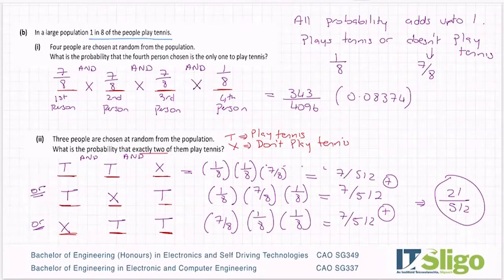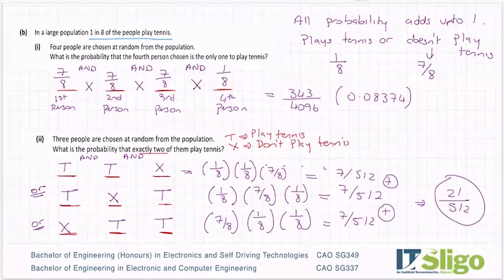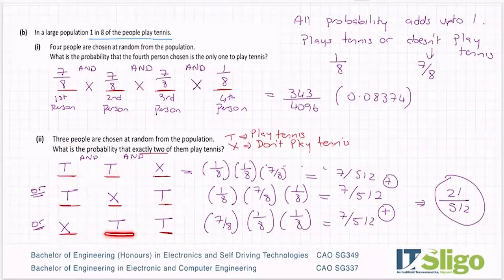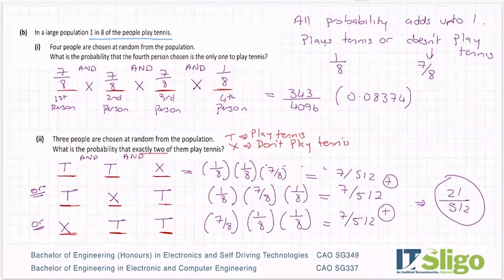Why did I have to consider all the OR options here? Because in this question they didn't tell me which two out of the three people play tennis, so I had to look at all the different scenarios where two people play tennis. The difference with the earlier question was that they gave me a specific order: the fourth person was the only one who played tennis, so there was only one order — not tennis, not tennis, not tennis, tennis.